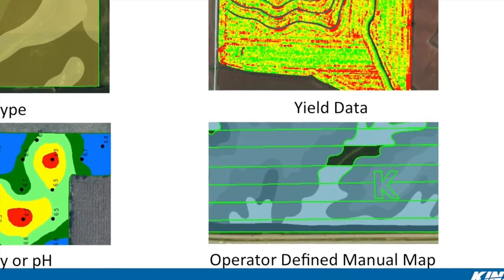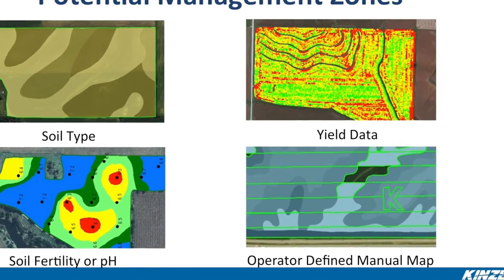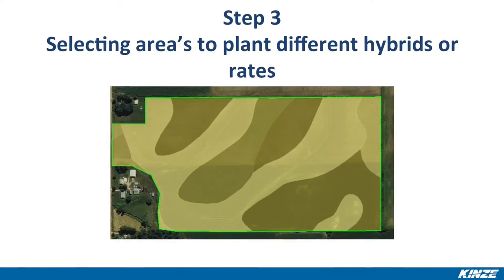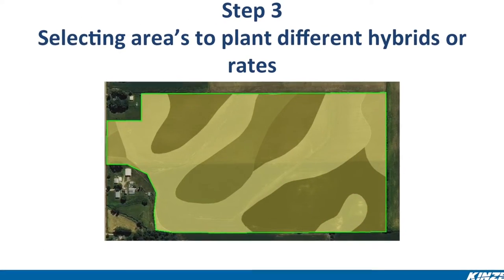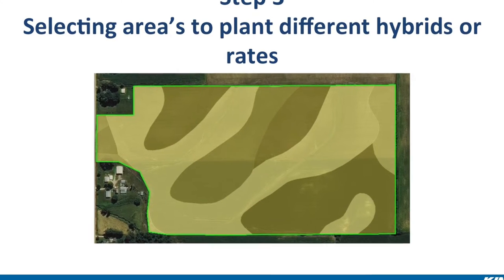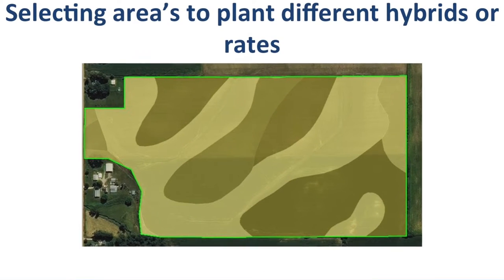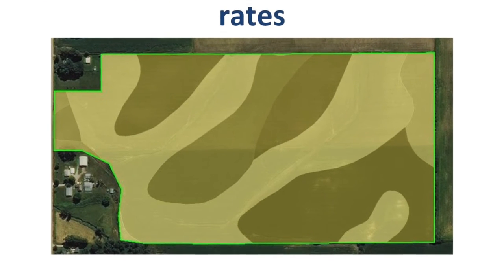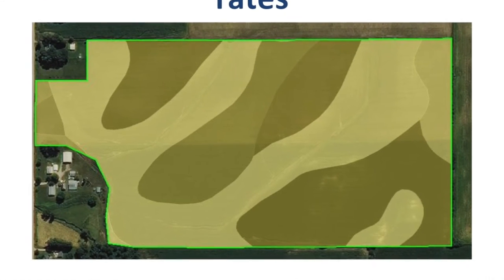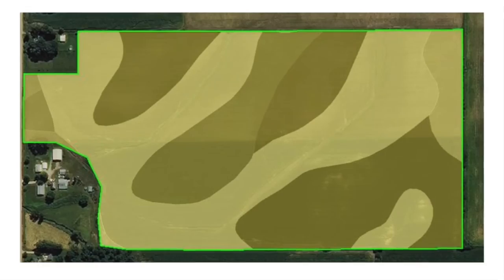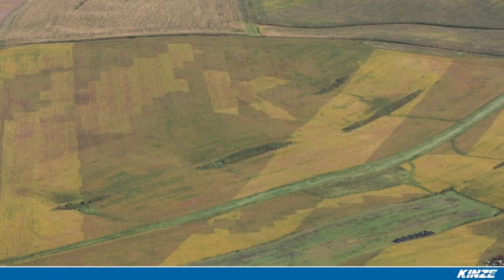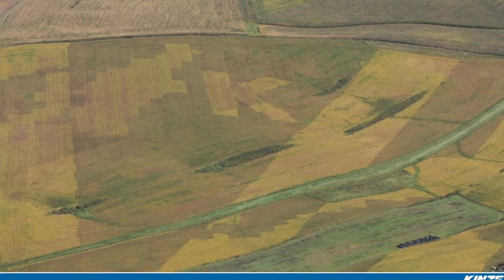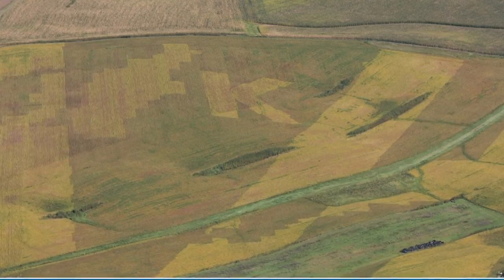It's not uncommon to involve your agronomist or seed professional when making a decision on a management zone. Once you've made your decision on what type of management zone you're going to utilize, you will need to overlay that specific zone with your field's boundary map. With the example on screen, we've created two different zones based off of the soil types in the field. In this flyover field, you can see that we've created a custom management zone to show the capabilities of the 4900 Multi-Hybrid Electric Drive Planter.